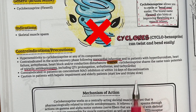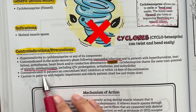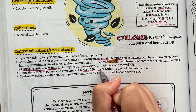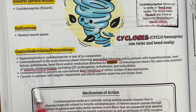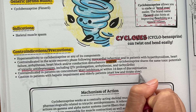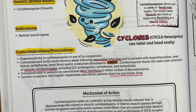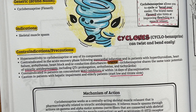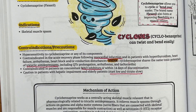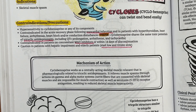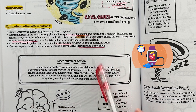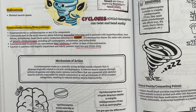It is contraindicated in patients on monoamine oxidase inhibitors, or within 14 days of discontinuation. The reason is that MAOIs raise levels of various chemicals in the body including norepinephrine. Cyclobenzaprine also increases these chemicals, which can result in MAOI toxicity. Severe effects of MAOI toxicity include high fever, high blood pressure, and seizures. In rare cases, death can occur.